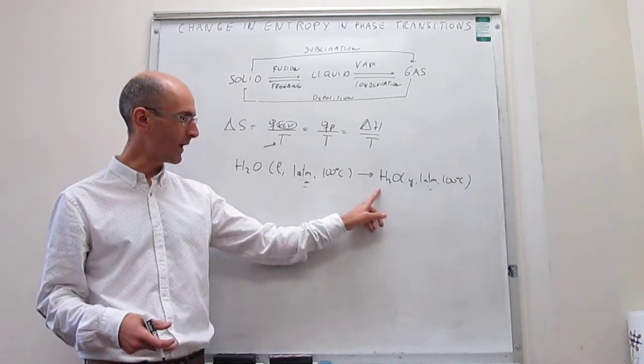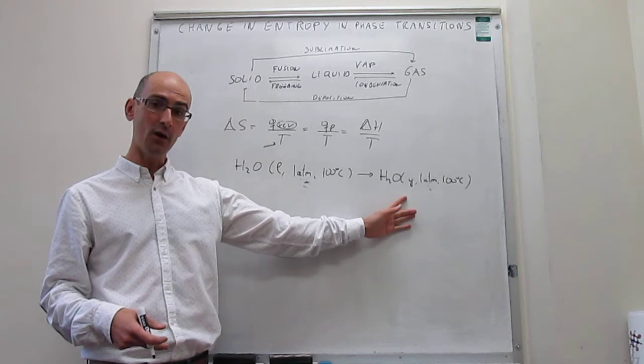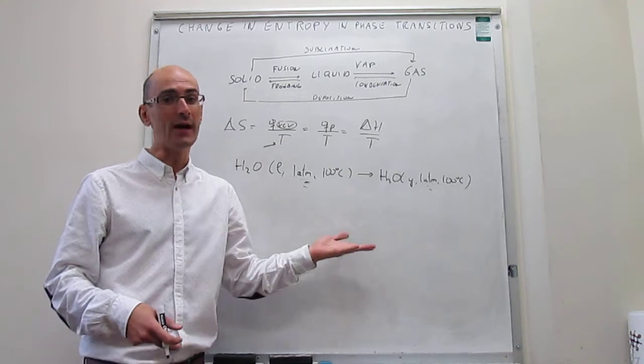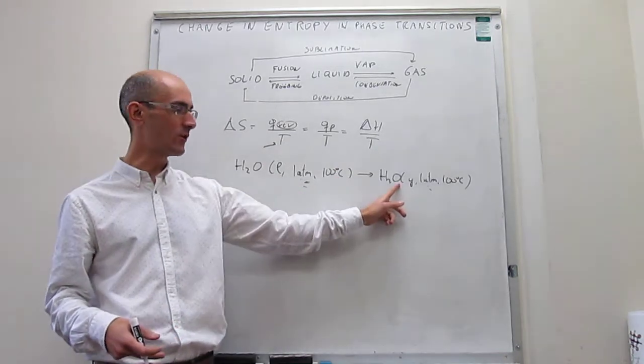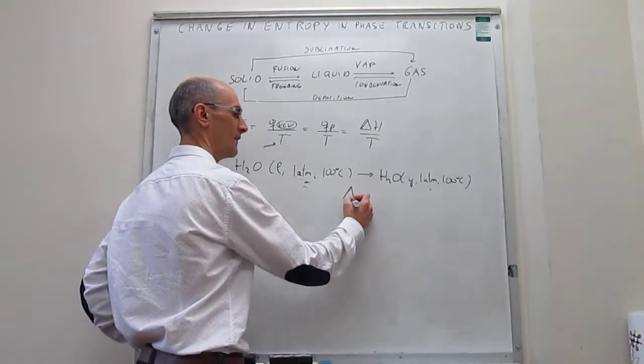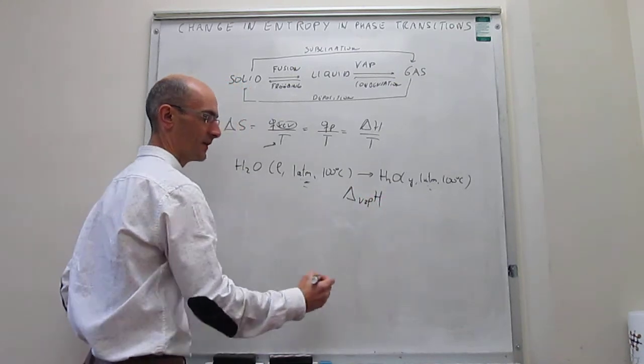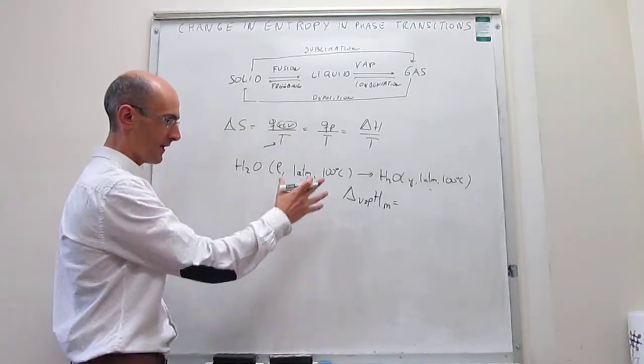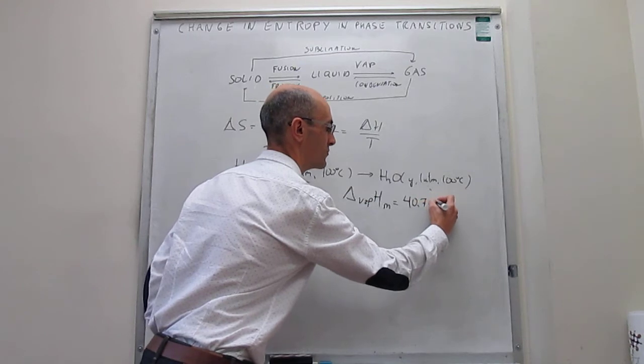For example, the one that we have right here would be the vaporization of a liquid to a gas. Obviously, a gas is something that has more energy than a liquid. So you have to add some energy into this liquid at 100 Celsius in order to get the gas. So we expect the enthalpy, the change in enthalpy of vaporization, to be a positive number. And this is well known. Under these conditions, this number happens to be 40.7 kilojoules per mole.